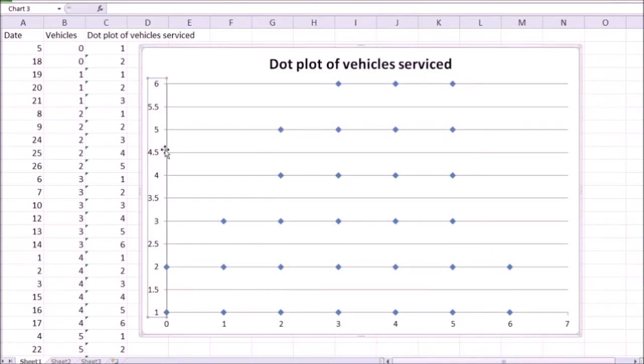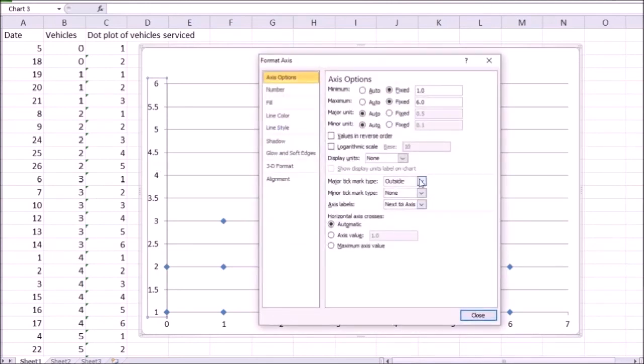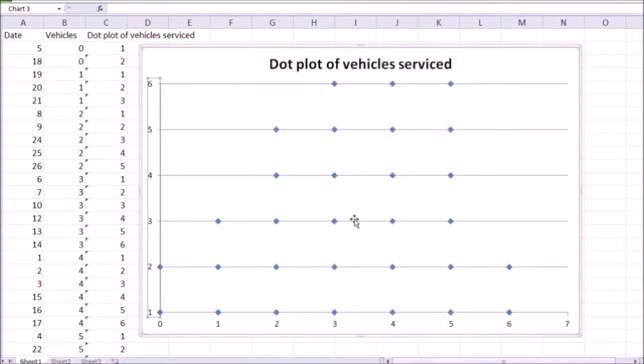What this does is it introduces 0.5 as a step shown on the grid line. I want to get rid of that as I don't count halves of vehicles. Again, double click on the vertical axis, and for the major, we're going to fix it to one instead of 0.5 and close.